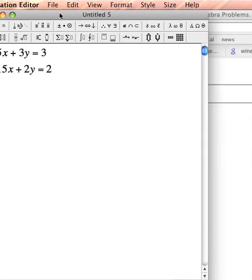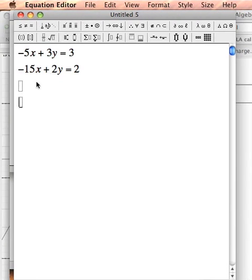So let's pick an equation. Let's see. You know, if I notice my second equation has negative 15x, and I notice my first equation has 5x. And I know 5 and 15 are multiples of each other. So maybe if I multiply this equation by 3.